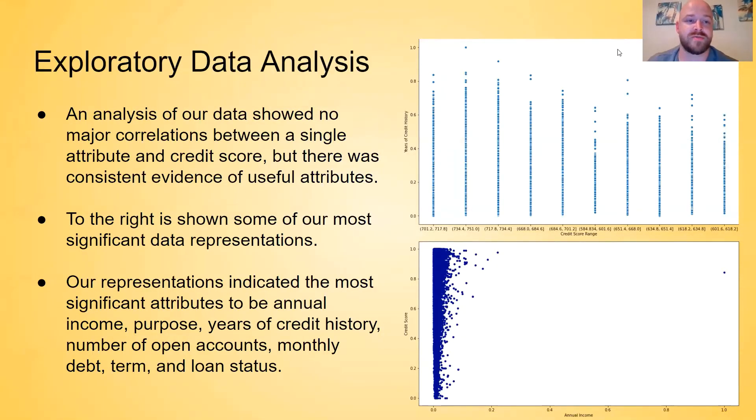Hi, my name is Dylan Long. I took part in the exploratory data analysis. We did not find any major correlations between attributes and credit score, but we did find enough of a trend between data representations to gain some useful information about which attributes were making contributions. We can see to the right we have a regression plot on top, which shows some correlation between credit score and years of credit history with more years of credit history corresponding to higher credit scores, which we would expect. And then below that we see in a scatter plot the higher annual incomes corresponding to higher credit scores, which we would also expect.